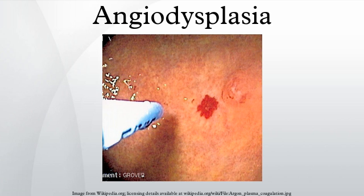Diagnosis of angiodysplasia is often accomplished with endoscopy — either colonoscopy or esophagogastroduodenoscopy. Although the lesions can be notoriously hard to find, the patient is usually diagnosed by endoscopy. A new technique, pill enteroscopy, has been a major advance in diagnosis, especially in the small bowel which is difficult to reach with traditional endoscopy.